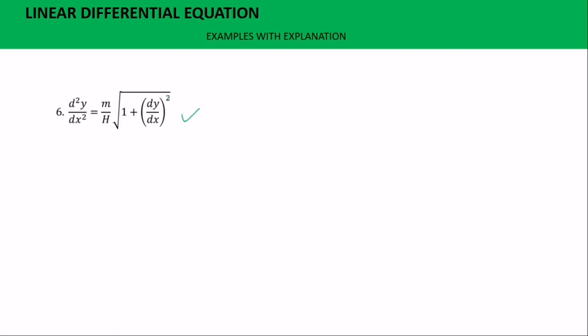You can eliminate the square root: squaring both sides cancels it, giving d²y/dx² = m/h · (1 + dy/dx), and the degree of this is one. So this is a linear differential equation. For example six, you can pause and try — this is also a linear differential equation.